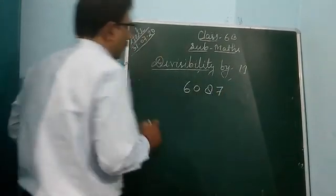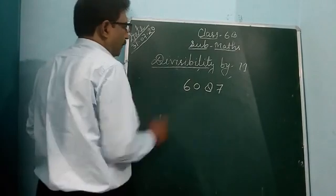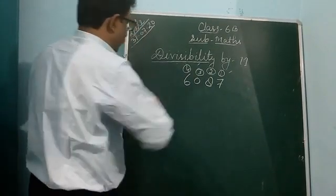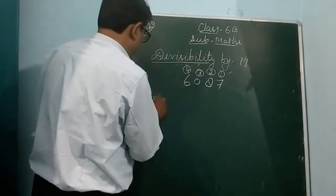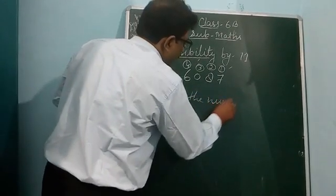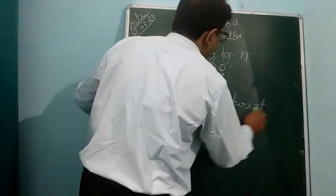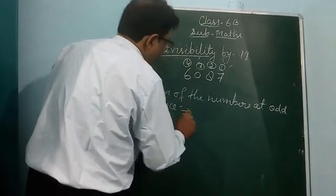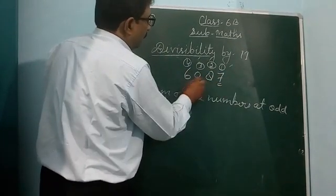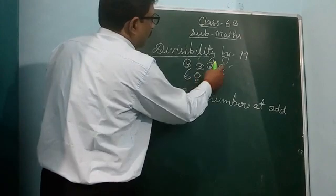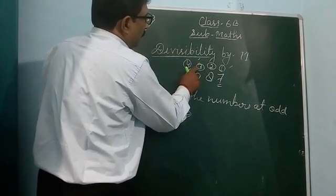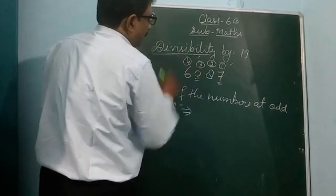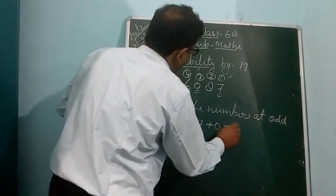Take another example: 6,087. Count from the right: 1, 2, 3, and 4. Sum of the numbers at odd places — positions 1 and 3 — means digits 7 and 0, so 7 plus 0 equals 7.